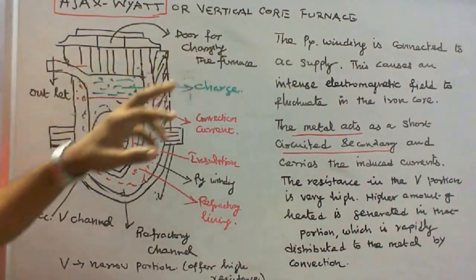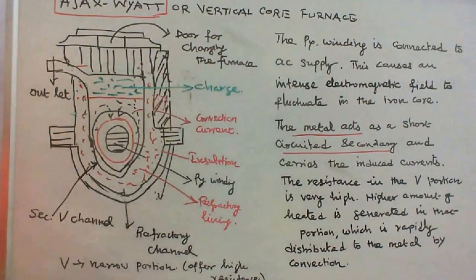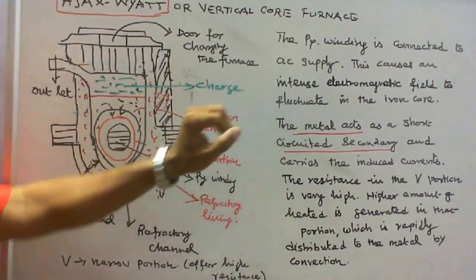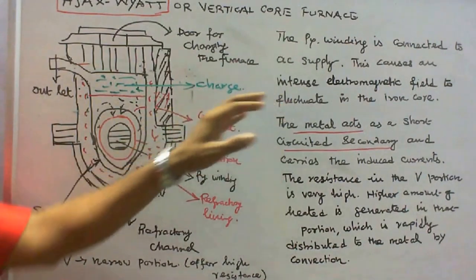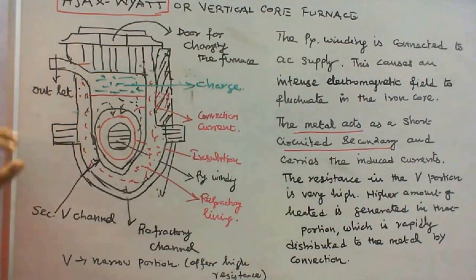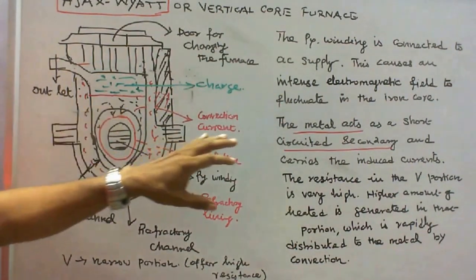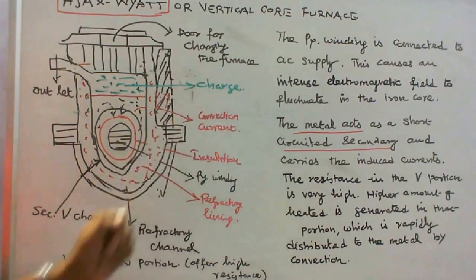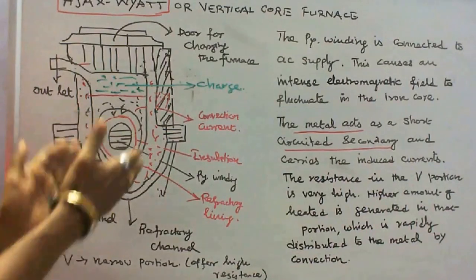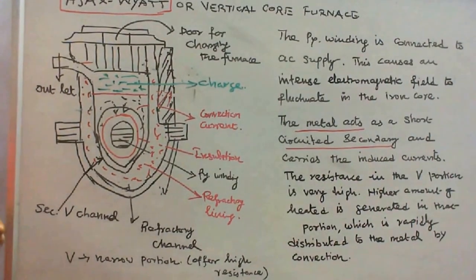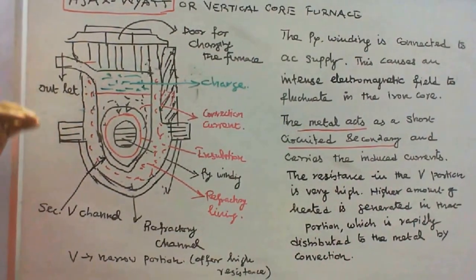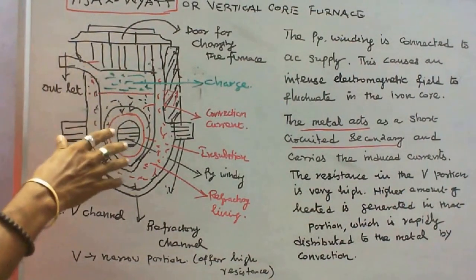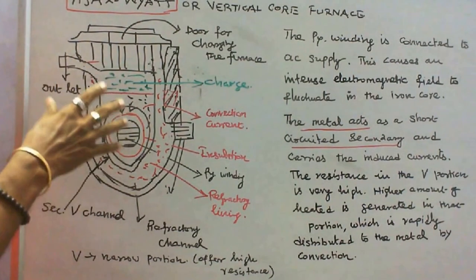The primary winding is connected to AC supply. This causes an intense electromagnetic field to fluctuate in the iron core. The metal acts as a short-circuited secondary and carries the induced currents. The resistance in the V-portion is very high, so a higher amount of heat is generated in that portion, which is rapidly distributed to the metal by convection.